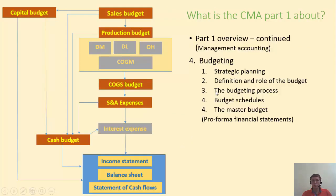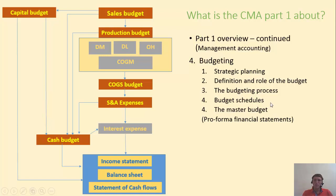Once we develop forecasting, we can move on to budgeting. A budget is a profit plan — it includes targets for both revenues and expenses, and must fit within our strategic plan. We will discuss how companies should involve as many people as possible: those with expertise, and those who will be executing the budget, to get their knowledge and to motivate them. Then we'll cover the details of creating a budget, starting with a sales budget, moving on to a capital budget, production budget, all the way to developing a full set of pro forma financial statements. This is a highly testable part of the CMA.